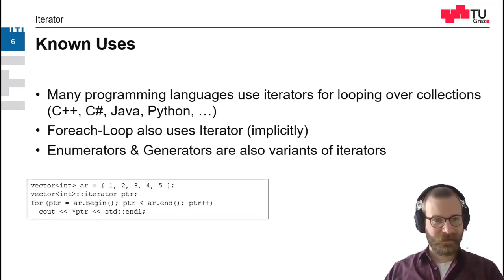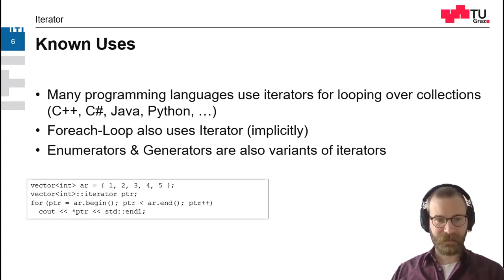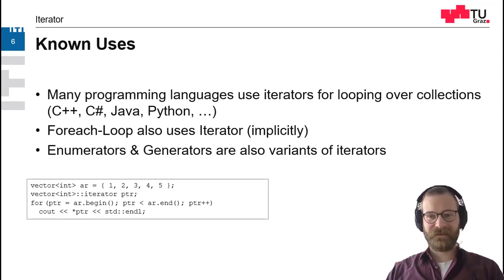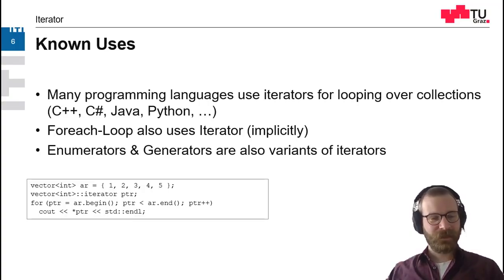Let's look at an example. We have a list of integers. Then we create our iterator for that list, and then we loop from the first element — the begin element — until the end element, and we increase the iterator by one step every time. In this case, the plus operator is overloaded and does not increment a counter variable as it normally does, but advances by one element. Whatever this means — in a tree this could mean something different than in an array. And then we can access the iterator by just dereferencing its element. The end is defined by a sentinel element which clearly defines the end.